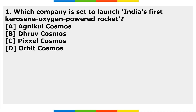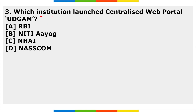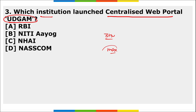Homework questions: First, which company is set to launch India's first kerosene-oxygen-powered rocket? Second, the Vidhayak Shetra Vikas Nidhi Yojana is associated with which state or UT? Third, which institution has launched the centralized web portal named Udgam? Please share your answers in the comment section below.